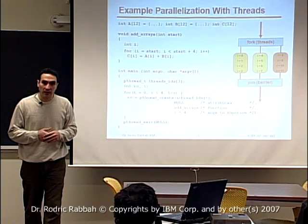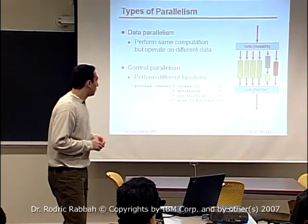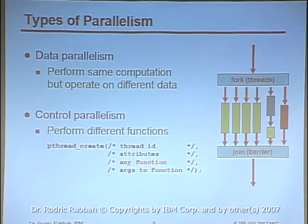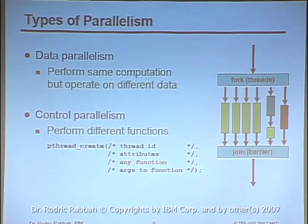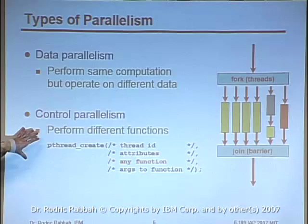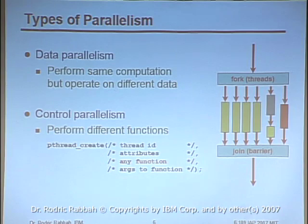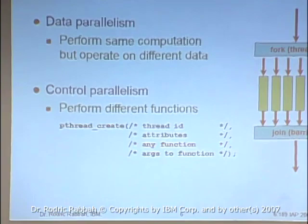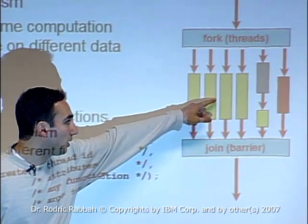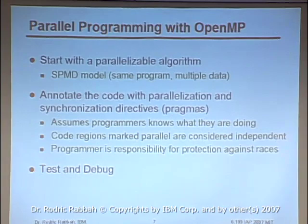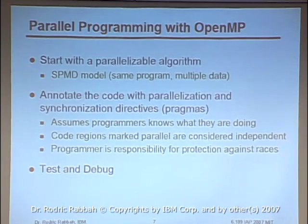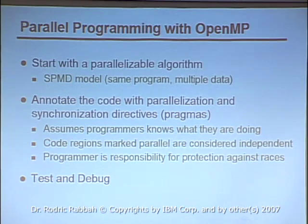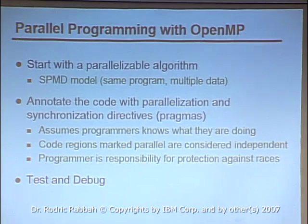That first example was data parallelism — you perform the same computation but partition the data into smaller chunks and replicate the computation. There's another form called control parallelism, which uses the same threading model but doesn't necessarily run the same function in each thread. There's a programming model that helps programmers by taking sequential code and adding annotations that say 'this loop is data parallel' or 'this set of code has this kind of control parallelism.'